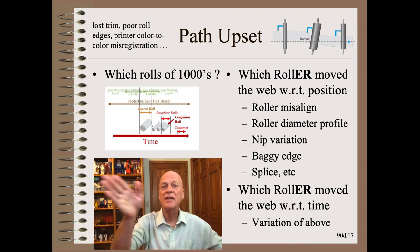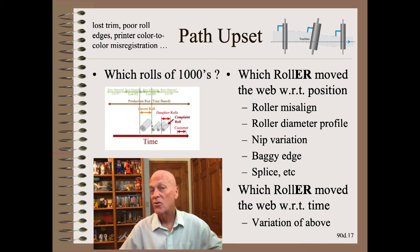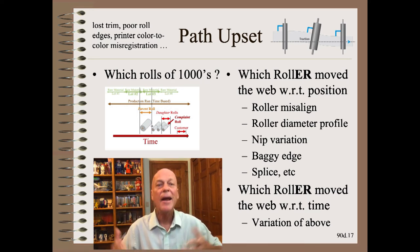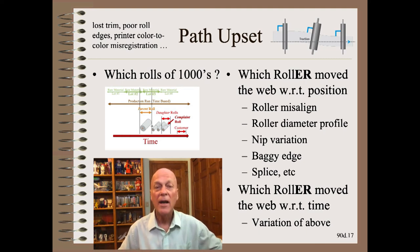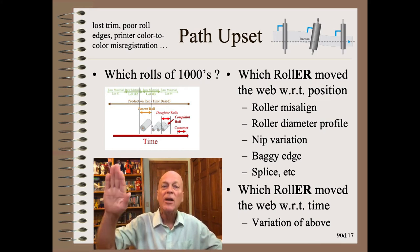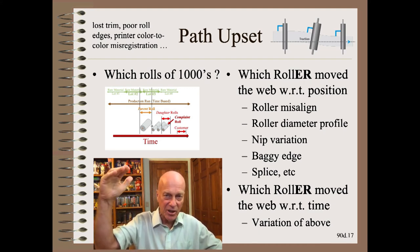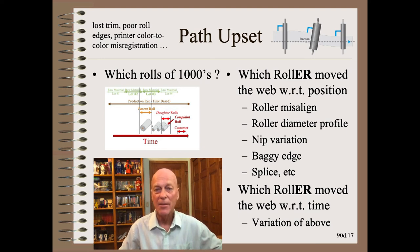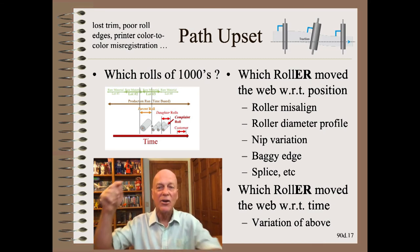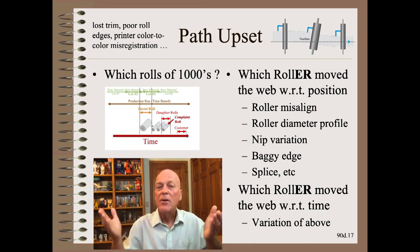Web path upsets are also common. They manifest in a widely varying set of troubles, including lost trim, poor roll edges, printer color-to-color misregistration, and many more. Here, we don't try to figure out which roll will be trouble. Rather, we figure out which roller moved the web the most. First, we study the sideways movement with respect to position down through the machine. Common sub-cases are roller troubles such as common misalignment, and web troubles such as baggy edges and splices. Second, we extend analysis to why that movement varies with time. We have a whole chapter in the Web Handling Handbook on how to diagnose and correct web path problems.